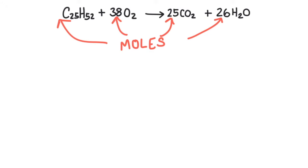This recipe says that if we react 1 mole of paraffin with 38 moles of oxygen gas, we will produce 25 moles of carbon dioxide and 26 moles of water.